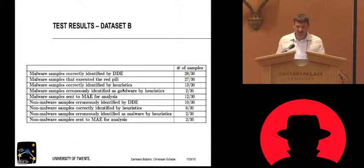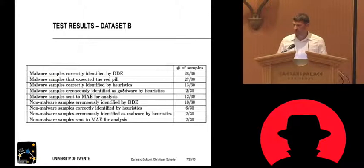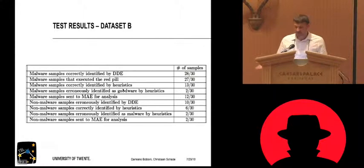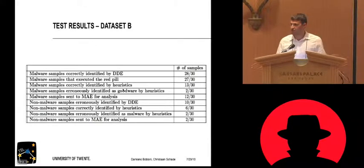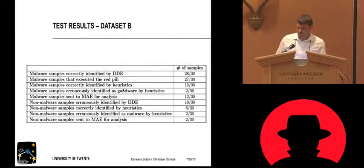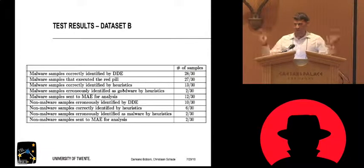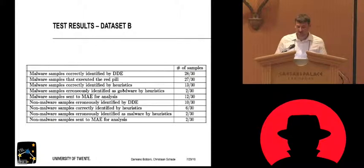The other lines basically tell you the false positive rate, because the other lines are about real goodware that we executed. In 10 cases out of 30, the download detection engine said there is something going on here, and shipped the RedPill. In six cases out of 10, the heuristics correctly identified it as goodware — we made a mistake — and in the other cases we just shipped the goodware to the engine.